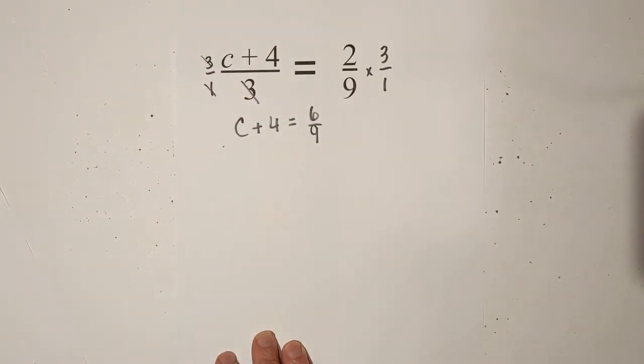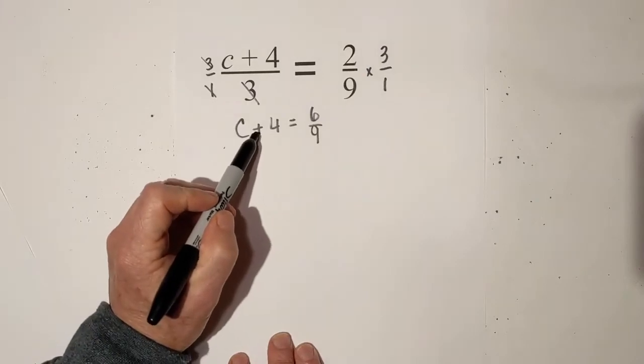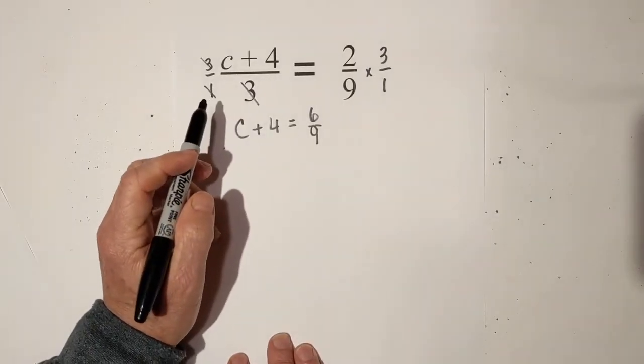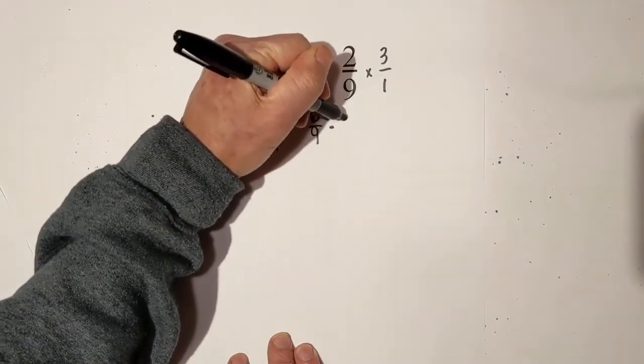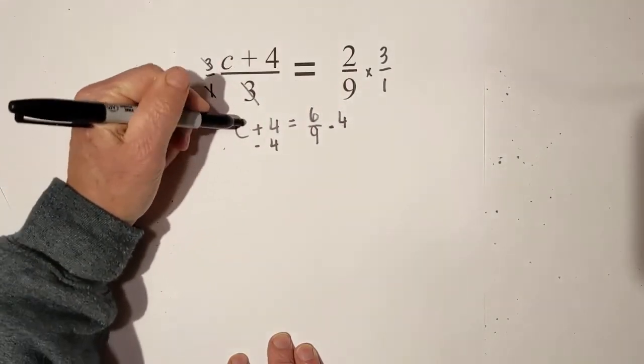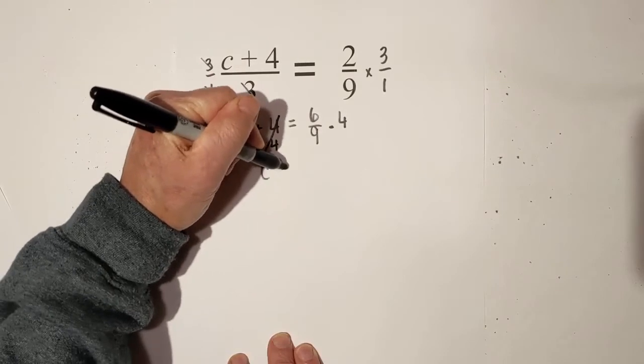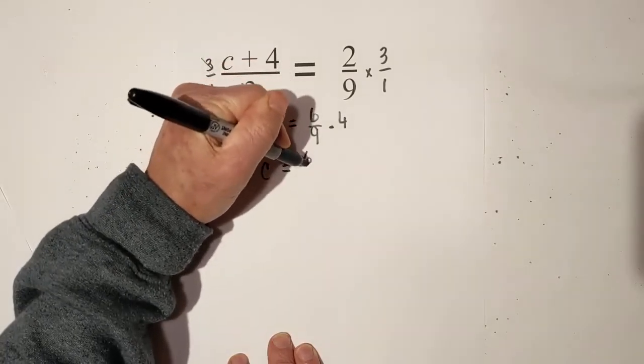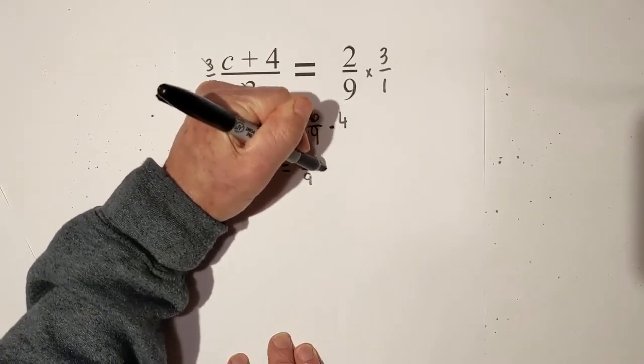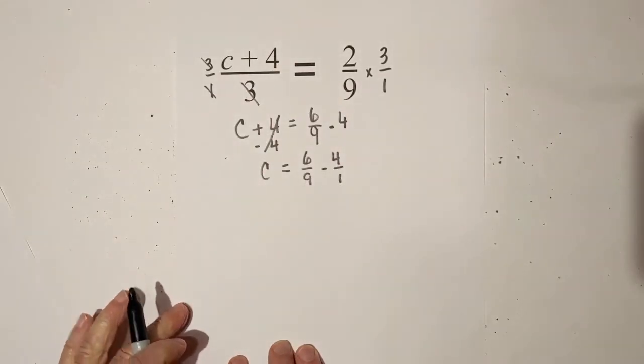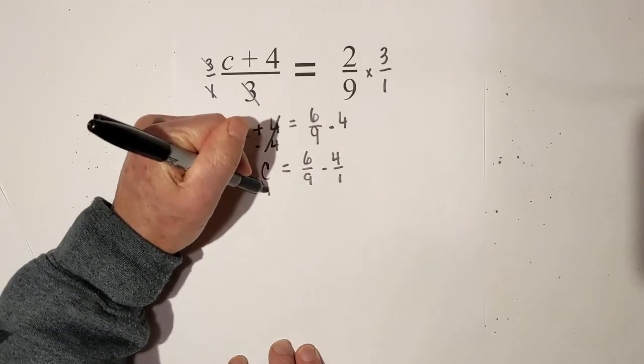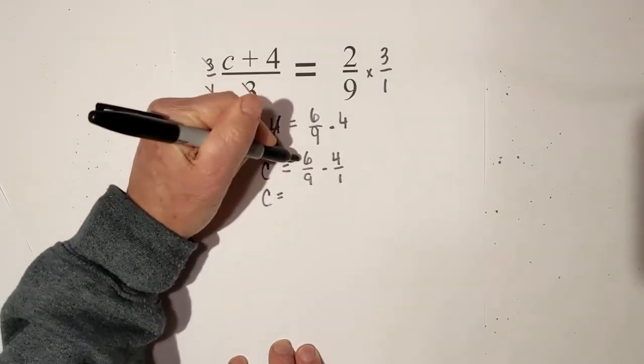So now I've got a fairly straightforward fraction. Let's see what I can do here next. What we need to do is I need to get rid of this four. And so what I can do is I can subtract four from both sides. So these cancel. C is equal to six-ninths minus four, and I'll do four over one. Well, the first thing I'm going to do is I'm going to reduce the six-ninths to make it a little bit easier.